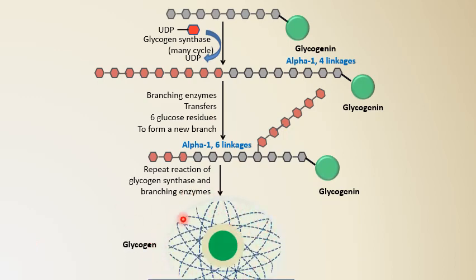The glycogen molecule is very much branched and compact, synthesized with the help of two enzymes: glycogen synthase and branching enzyme. Deficiency of the branching enzyme leads to a type 4 glycogen storage disease called amylopectinosis or Anderson's disease, in which the glycogen molecule has only alpha-1,4 linkages, leading to hypoglycemia as well as hepatosplenomegaly.